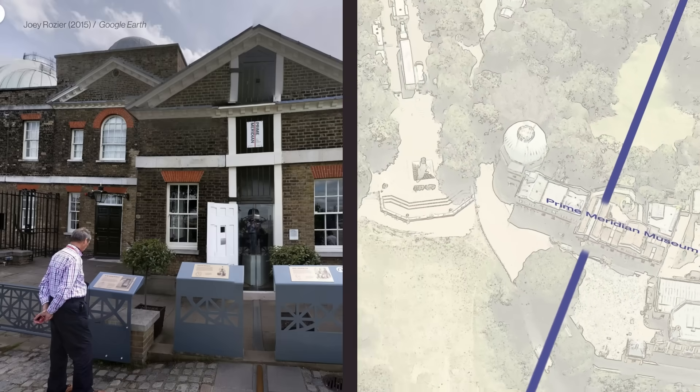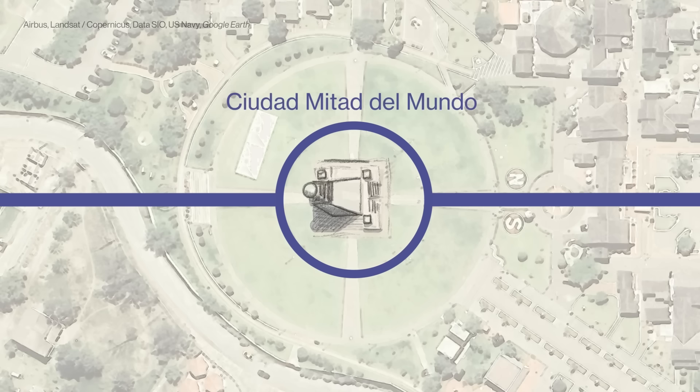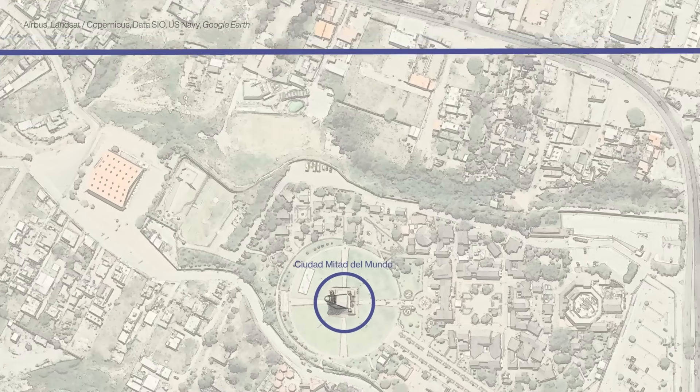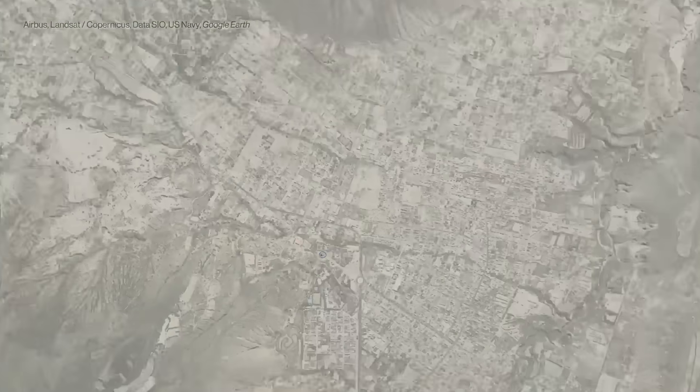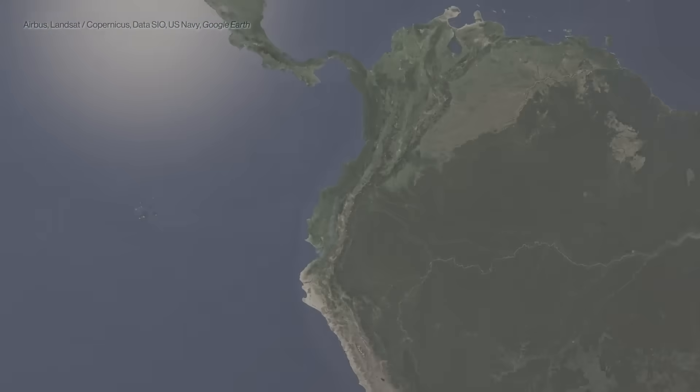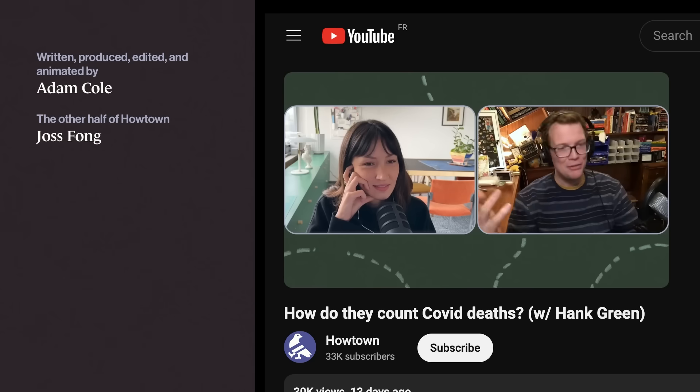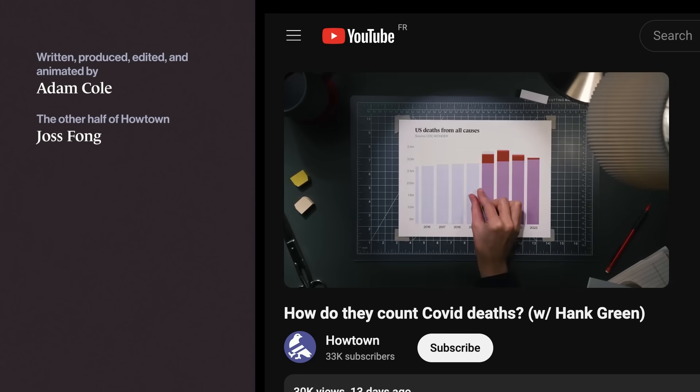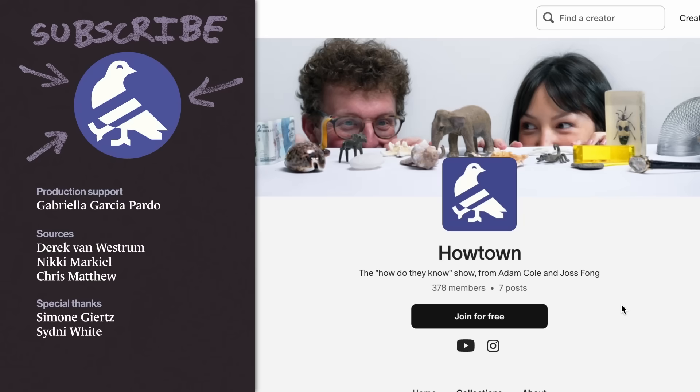Like at the Prime Meridian Museum, GPS tells tourists that the actual line is 102 meters east in an unremarkable field. Ecuador's monument to the equator is 240 meters off. And the circumference of the ellipsoid that best matches Earth's actual shape isn't a perfect 40,000 kilometers. It's 40,007.863. In Howtown's first two videos, Joss untangles COVID death data, and I dive into the science of dog vision. And there's more content on our Patreon.